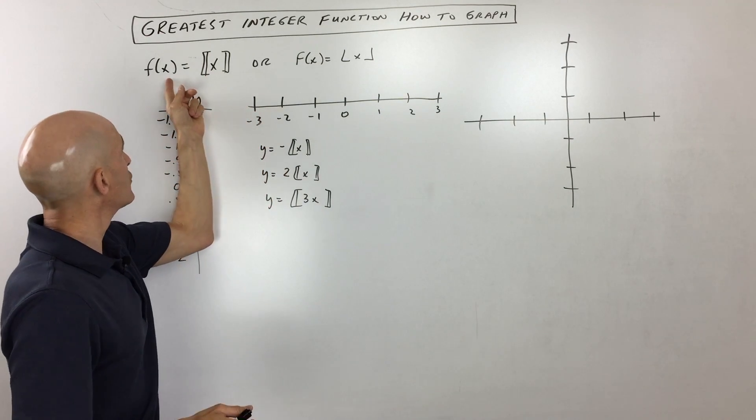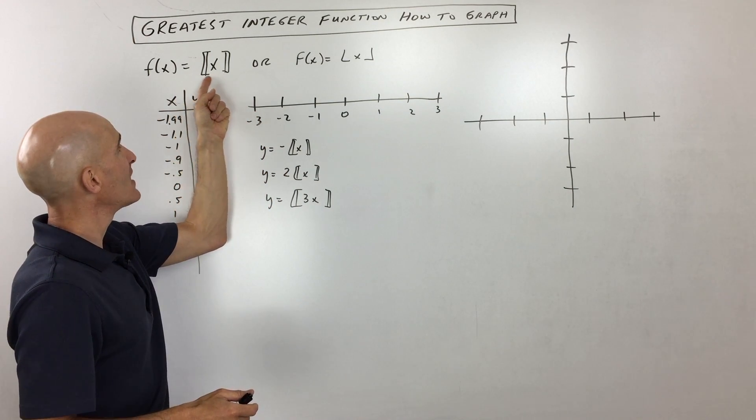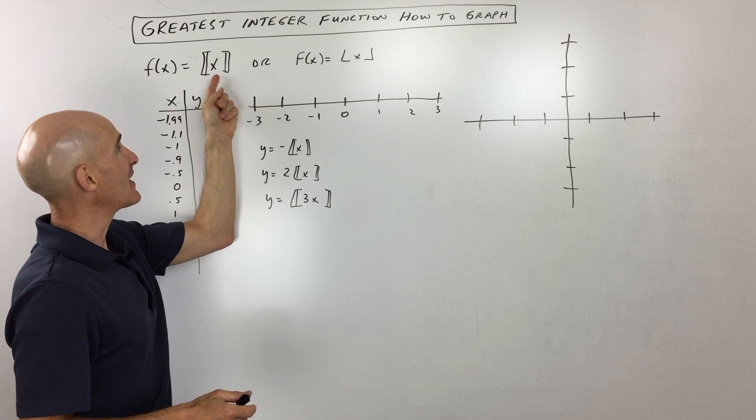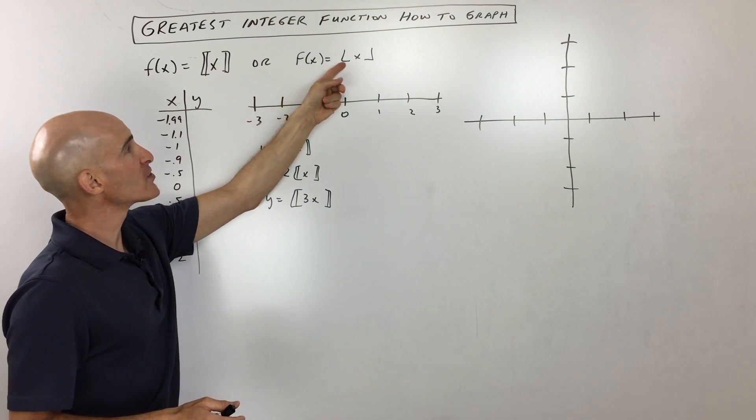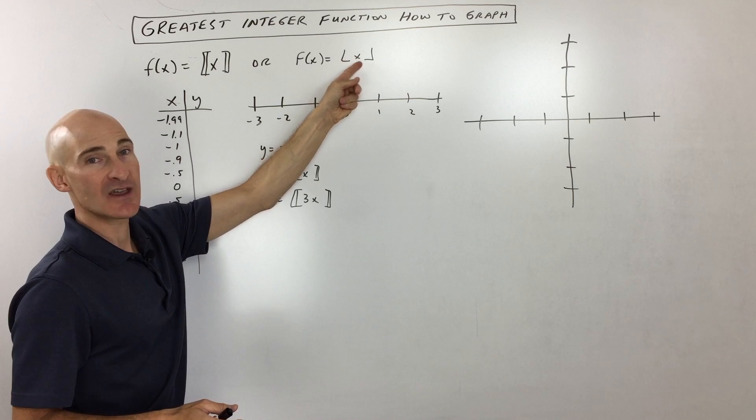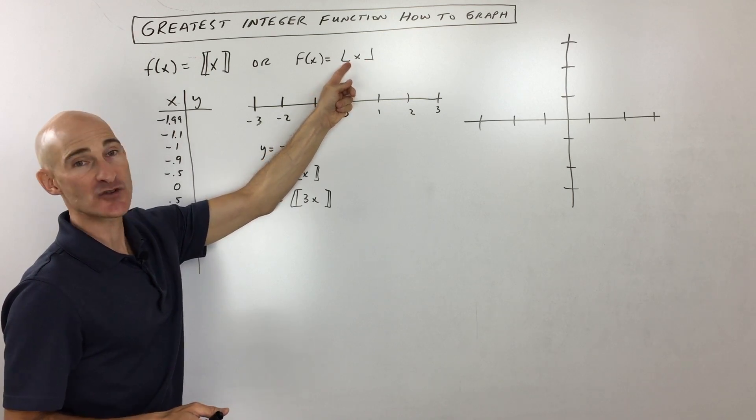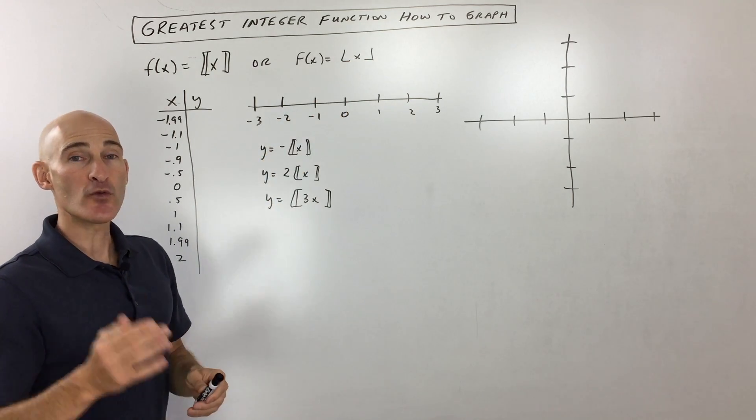So the first thing is to recognize the notation. f of x equals this right here, it looks kind of a strange symbol. Or sometimes what they do is they put these little bars on the bottom, these little bars right here. And what that indicates is that we're rounding down.